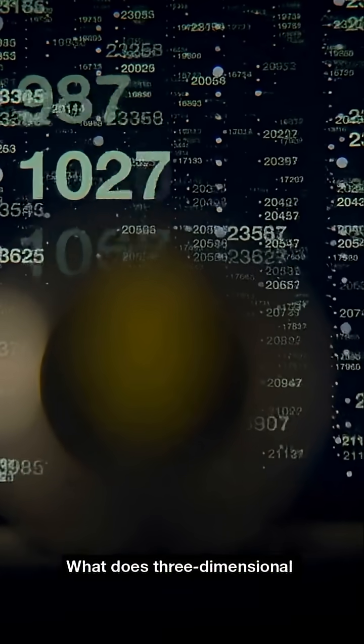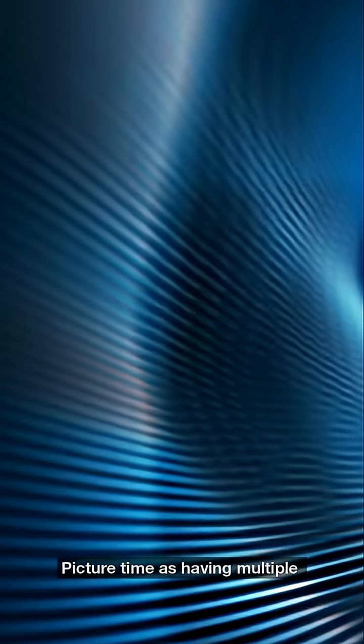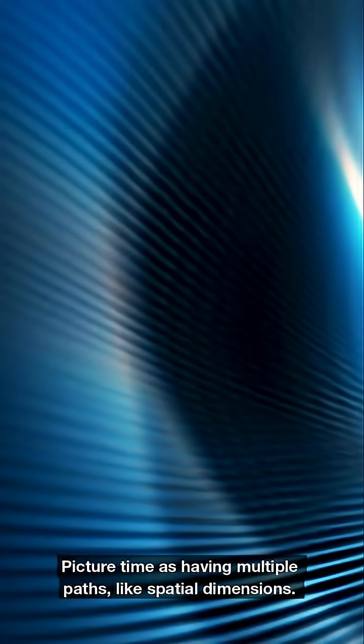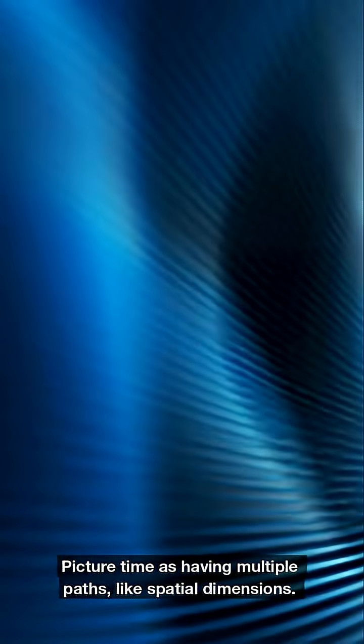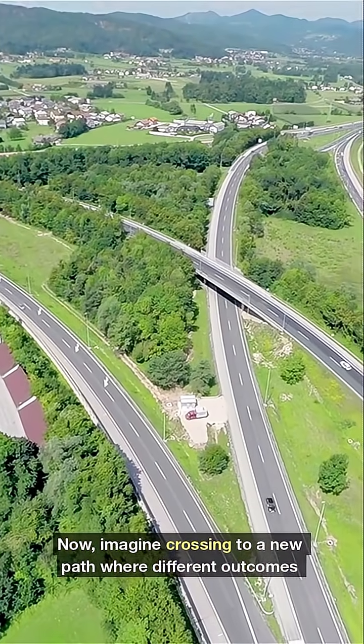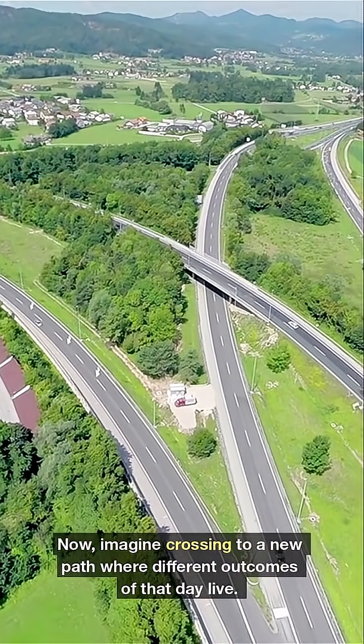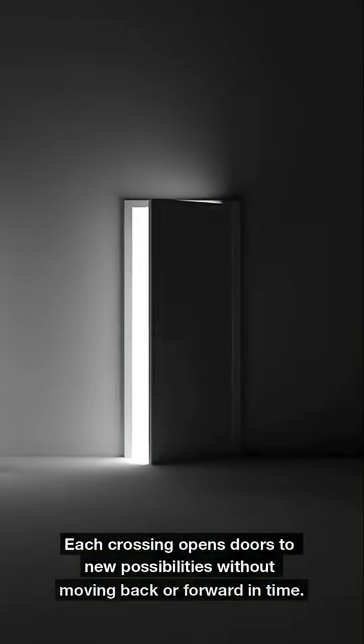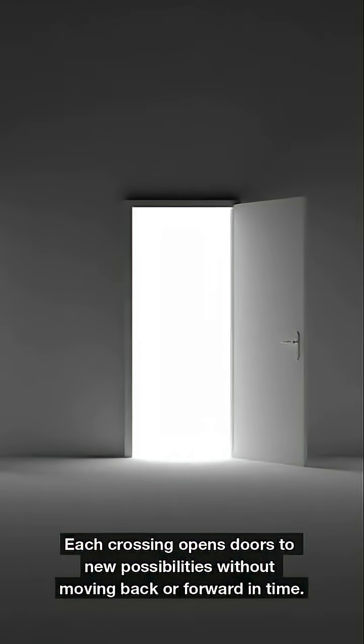What does three-dimensional time mean? Picture time as having multiple paths, like spatial dimensions. Think of your daily life as walking one path. Now imagine crossing to a new path where different outcomes of that day live. Each crossing opens doors to new possibilities without moving back or forward in time.